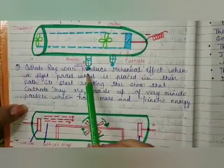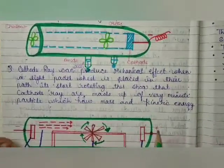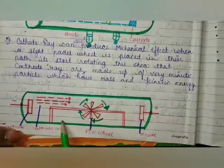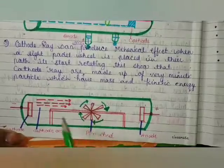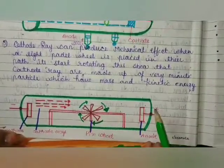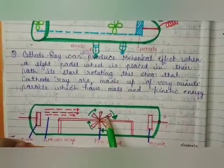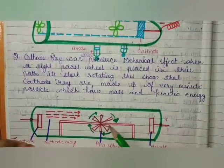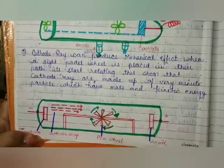Cathode rays produce a mechanical effect. In this diagram, you can understand what happens in this discharge tube experiment. It has a paddle that is movable. When cathode rays pass from the anode, this paddle starts moving — cathode rays produce a mechanical effect. This involves kinetic energy, and the pinwheel rotates.